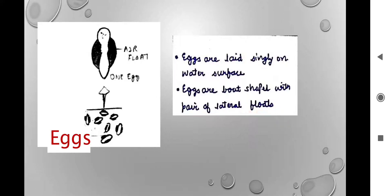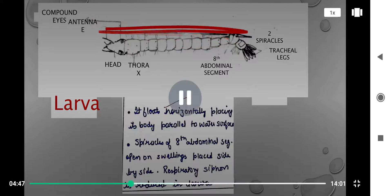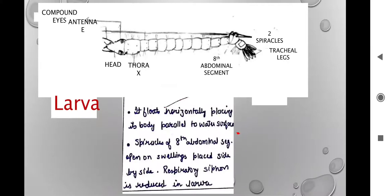Next we have larva. The larva floats horizontally, placing its body parallel to the water surface. If this is the water surface, then the body of the larva is generally placed parallel to it. These are identification differences — if you are a biologist asked to go to a water body and check which mosquito's larva this is, you identify it through the body posture and the way it is aligned to the water surface. If it is placed horizontally, it is Anopheles mosquito larva.